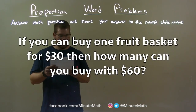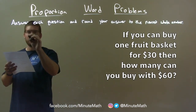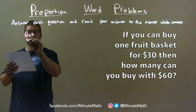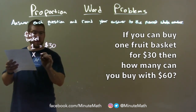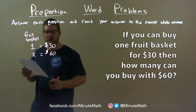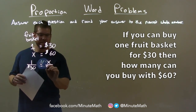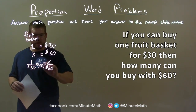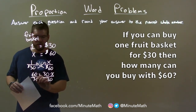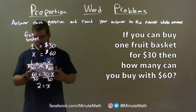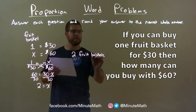If you can buy one fruit basket for $30, then how many can you buy with $60? We know one fruit basket equals $30. Set up a proportion: 1 over 30 equals X fruit baskets over $60. Cross-multiply: 1 times 60 is 60, and 30 times X is 30X. Divide both sides by 30 to get X by itself. 60 divided by 30 is 2. Our final answer is 2 fruit baskets for $60.